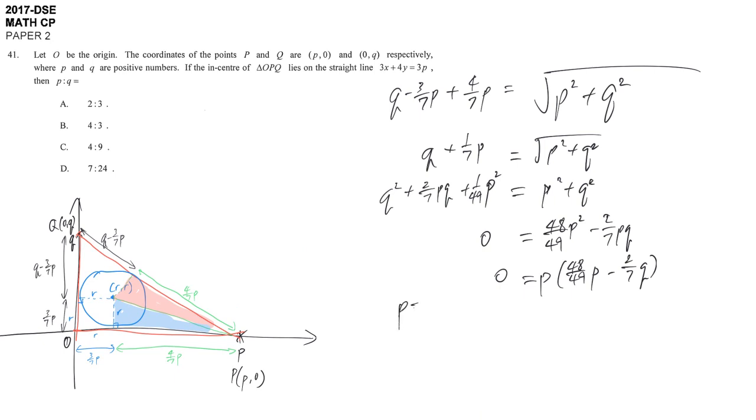By the zero product rule, either P = 0 or the other factor equals zero. P = 0 is rejected since P is positive. Multiplying through by 49 gives 48P = 14Q, so P/Q = 14/48. Simplified, we get 7/24. The answer is D.